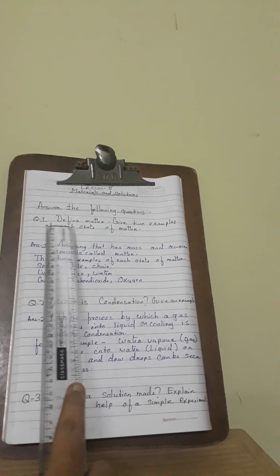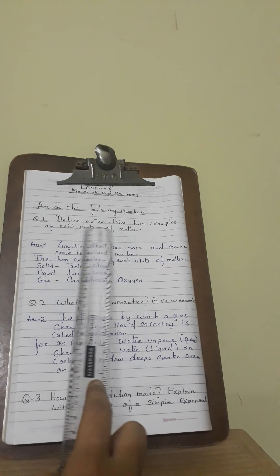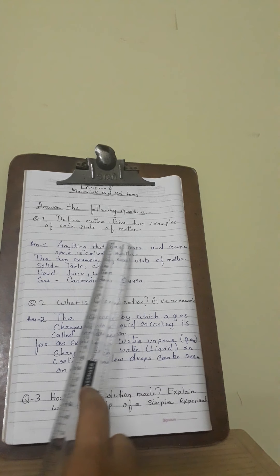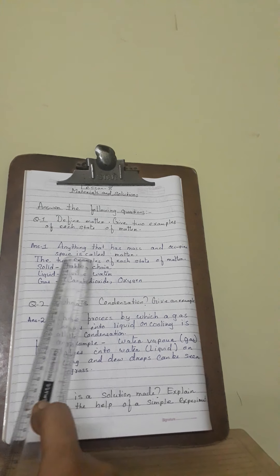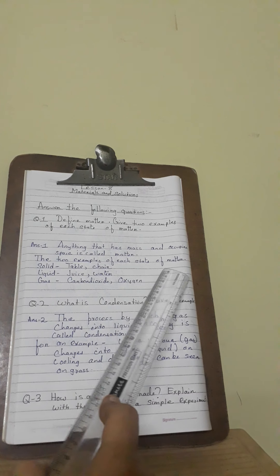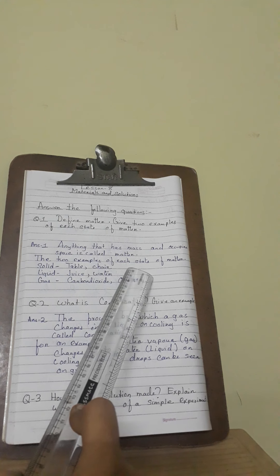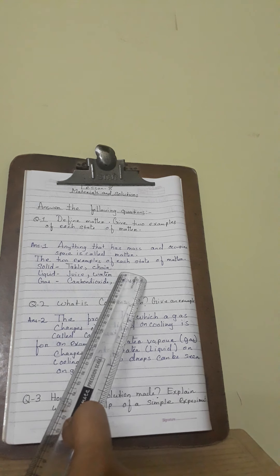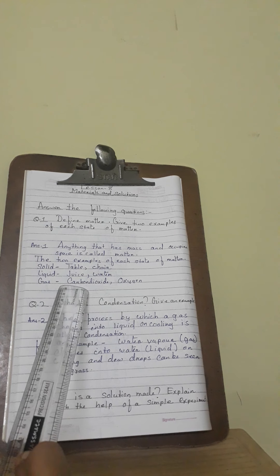Coming to question and answer: define matter and give two examples of each state of matter. Anything that has mass and occupies space is called matter. Two examples of each state of matter: solid — table, chair; liquid — juice and water.